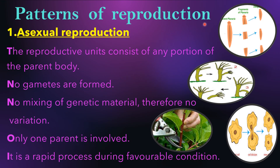Mainly there are two types of reproduction. First, asexual reproduction: the reproductive units consist of any portion of the parent body. No gametes are formed, no mixing of genetic material, therefore no variation. Only one parent is involved in asexual reproduction. It is a rapid process during favorable conditions. These are the main points to remember in asexual reproduction.